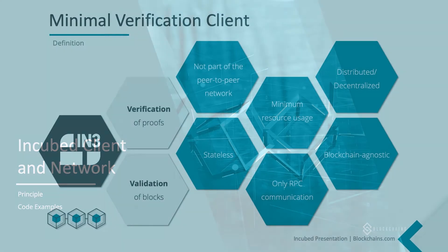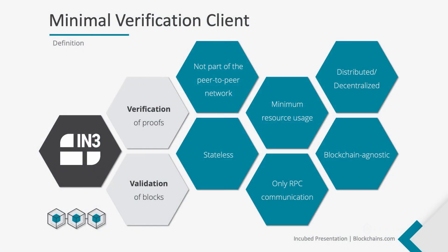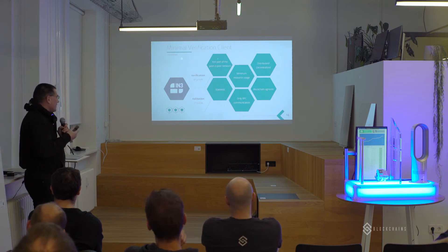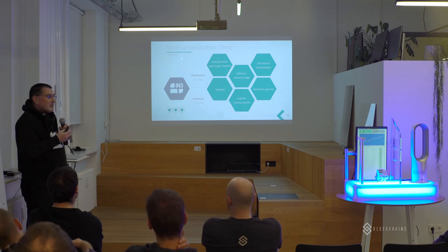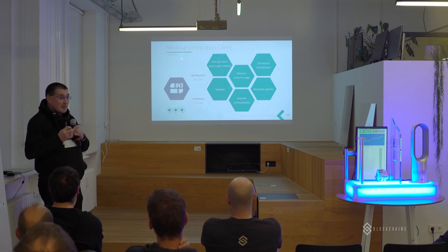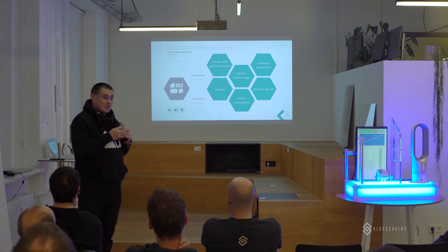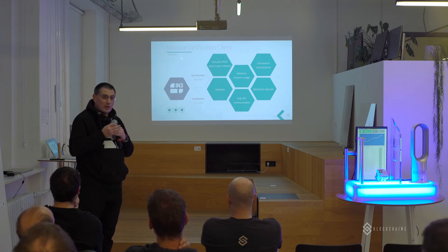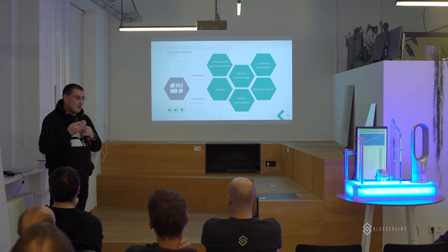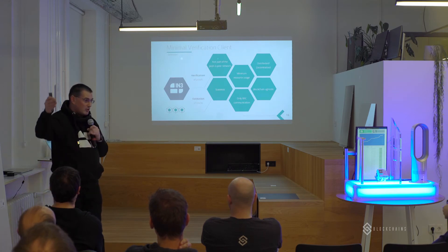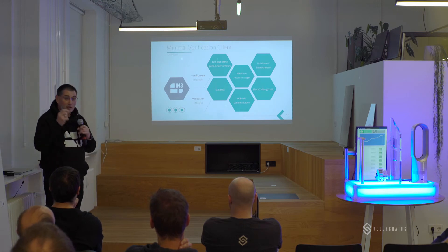We call it a minimal verification client — a client of minimal resource consumption which is able to verify and validate all the information by itself. It is not part of the peer-to-peer network. It is stateless, meaning it doesn't need synchronized information, and it needs far less resources. Because it doesn't need to synchronize from one blockchain or store any state information, we can communicate with several blockchains at the same time. At the moment we support all Ethereum protocol-based blockchains, but you can talk to a private chain and at the same time talk to public Ethereum with the same client without any changes.